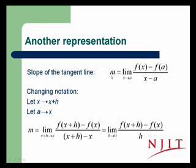So we have our definition, the slope of the tangent line is equal to the limit as x goes to a of f(x) minus f(a) over x minus a. And let's turn all the x's into x plus h, all the a's into x's, and let's see what happens. The x in the limit becomes x plus h. The a in the limit becomes x. So our limit as x goes to a becomes the limit as x plus h goes to x.